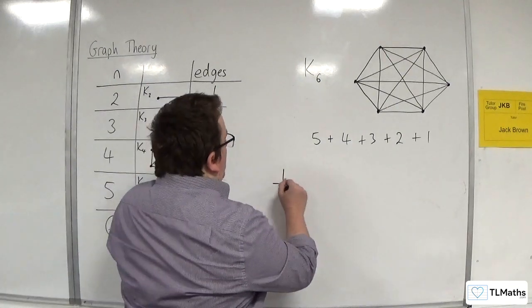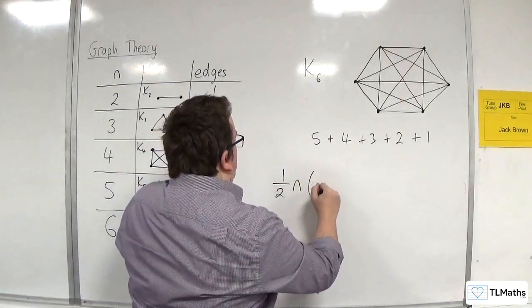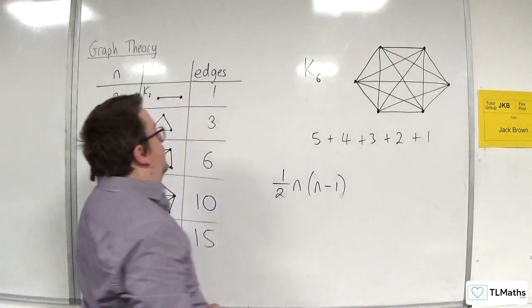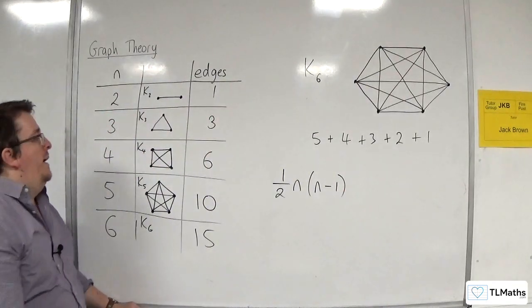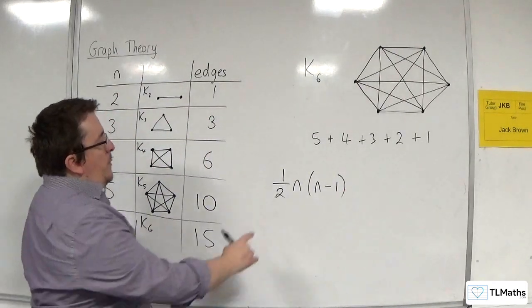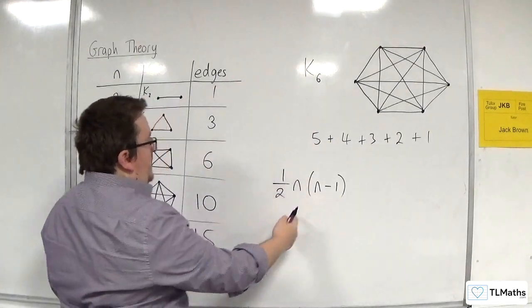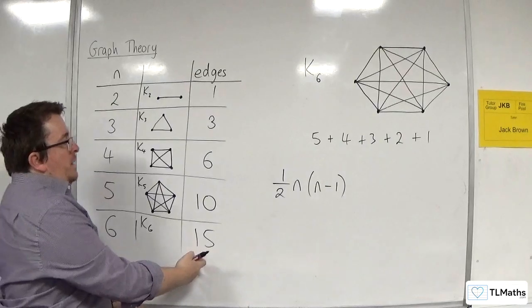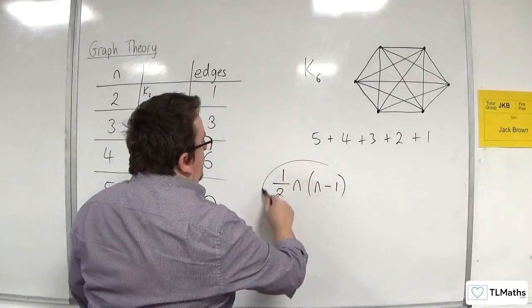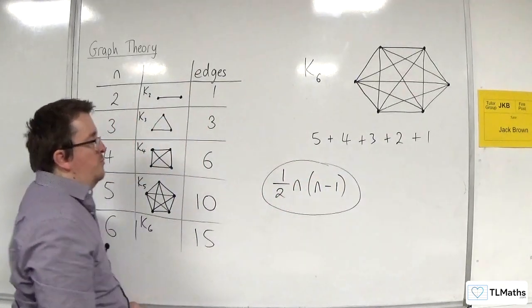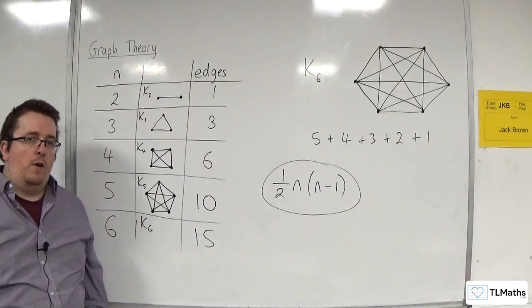So, we have a formula for the total number of edges in a complete graph. And that would be 1/2 times n times n minus 1. So, when n is 6, we would have 1/2 times 6 times 5. So, a half of 30, which is 15. So, this is a formula for the total number of edges in a complete graph.